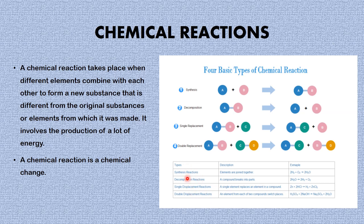Finally, we have the double displacement reaction. In a double displacement reaction, an element from each of the two compounds switch places. As you have in tetraosulfate 6-acid and sodium hydroxide — you can see that the hydrogen has joined with the hydroxide, while the sodium has joined with the tetraosulfate 6-acid ions. So that is that about the four basic chemical reactions.